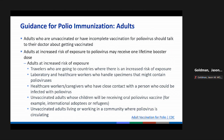The current guidance for polio immunization for adults — from the ACIP statement last updated in 2000 — states that adults who are unvaccinated or have incomplete vaccination should talk to their doctor about getting vaccinated. Adults at increased risk of exposure may receive one lifetime booster dose. Those at increased risk include travelers to high-risk countries, laboratory and healthcare workers handling polio specimens, caregivers with close contact with potentially infected persons, and unvaccinated adults living or working in a community where polio virus is circulating.